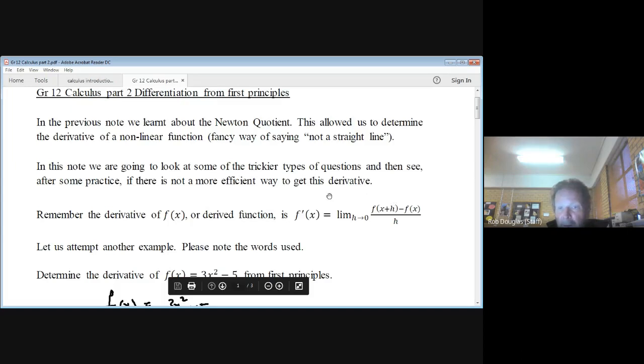You're given this in your formula sheet. It says f prime of x equals the limit as h approaches 0 of f of x plus h minus f of x over h.